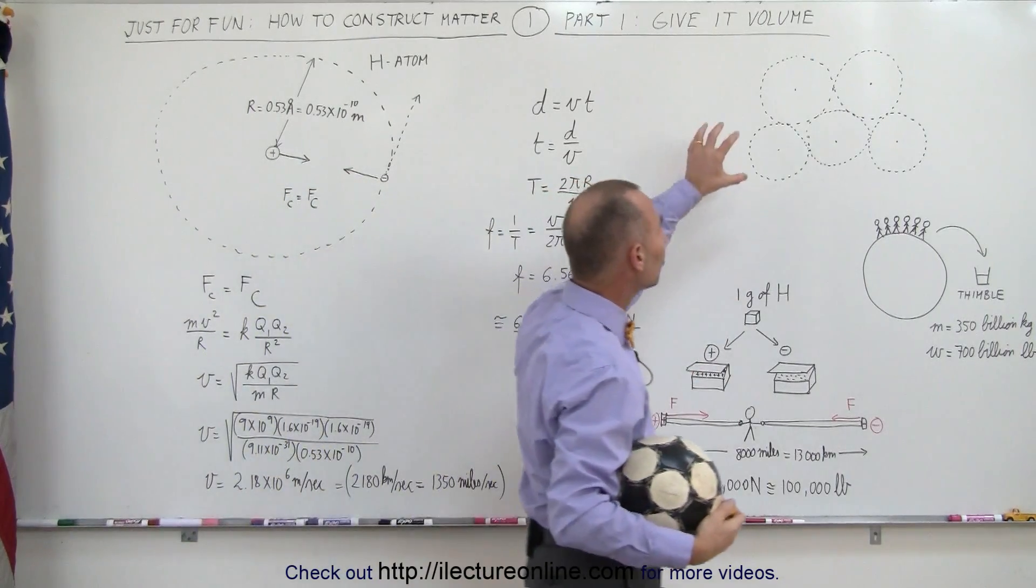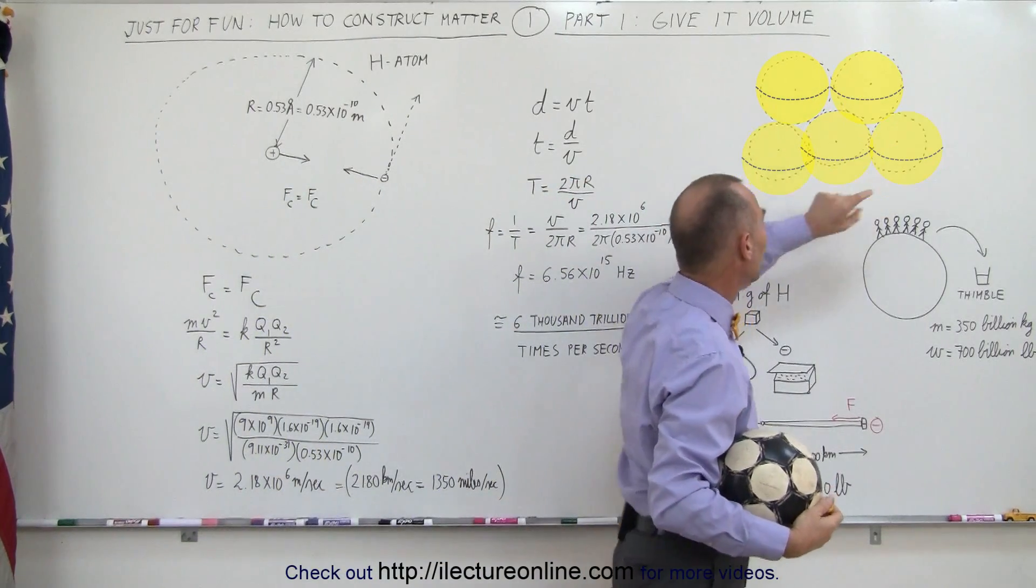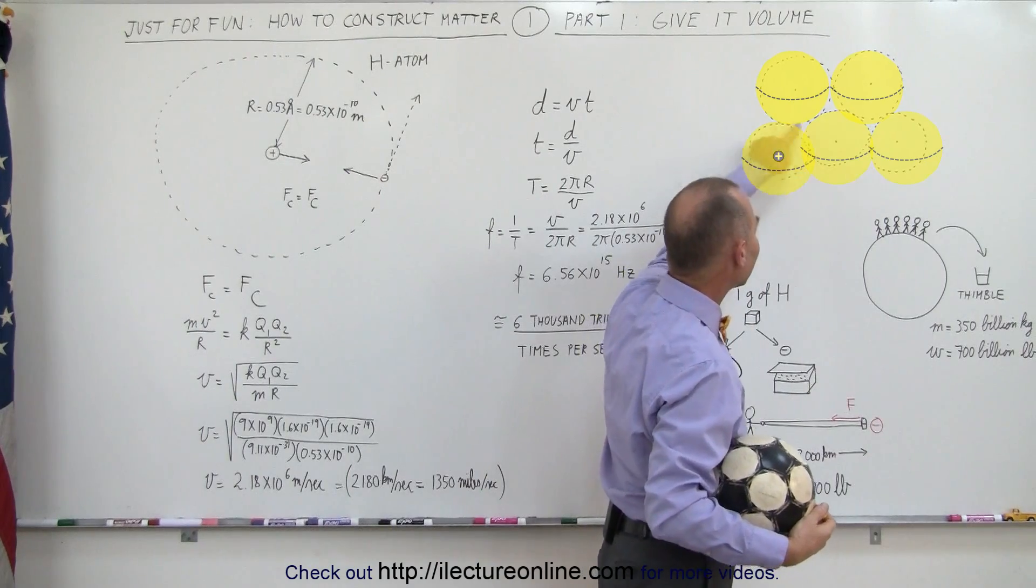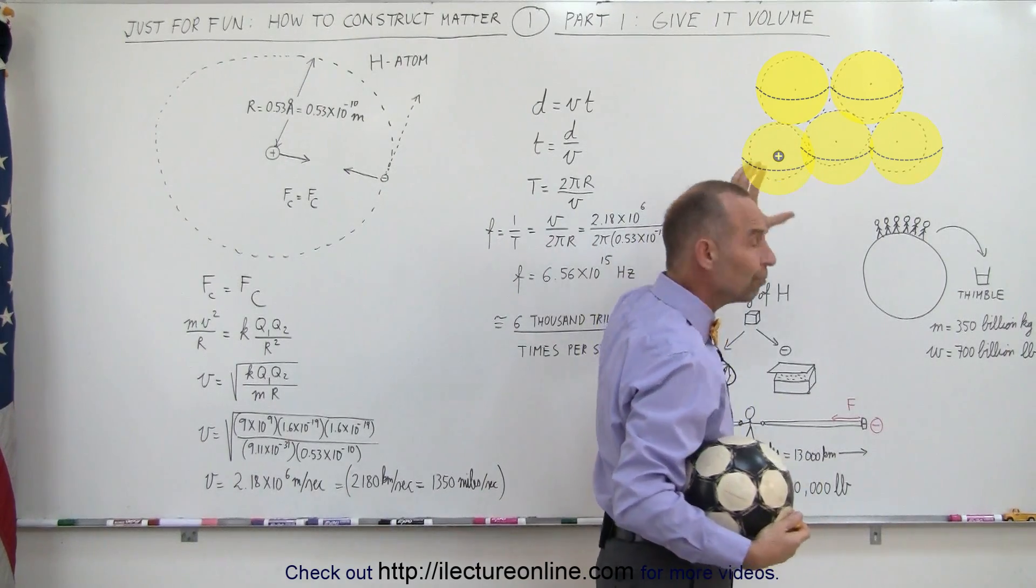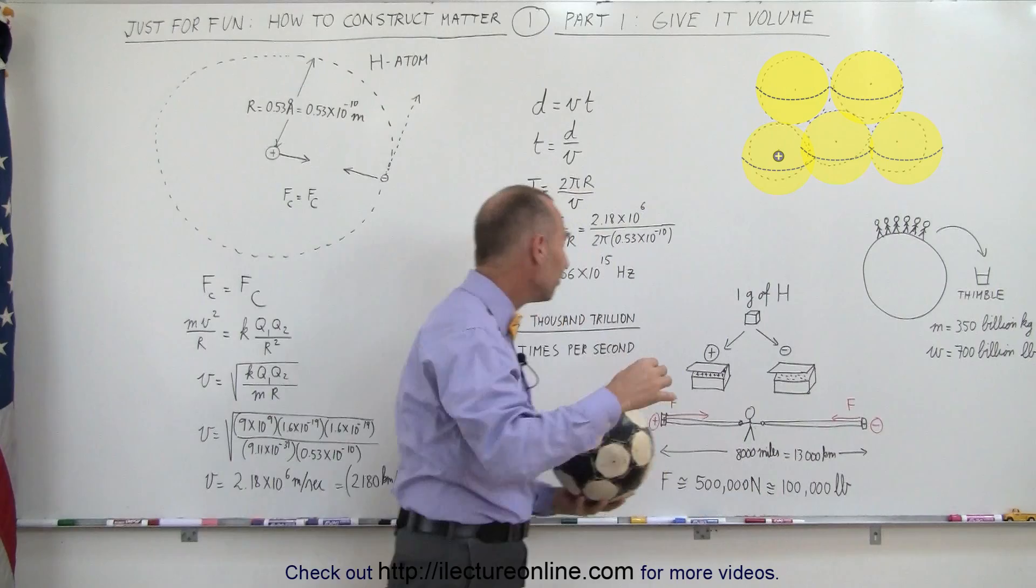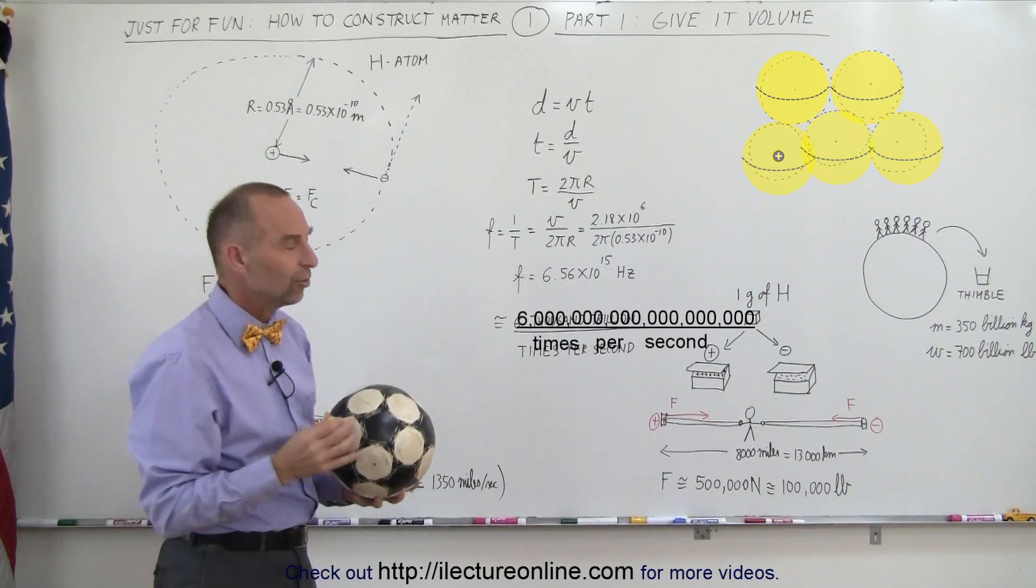In this way, you can actually stack up atoms on top of each other, which are made up of a tiny little nucleus at the center, and then the shell around it, which is made by that electron traveling around the nucleus that incredible number of times per second.